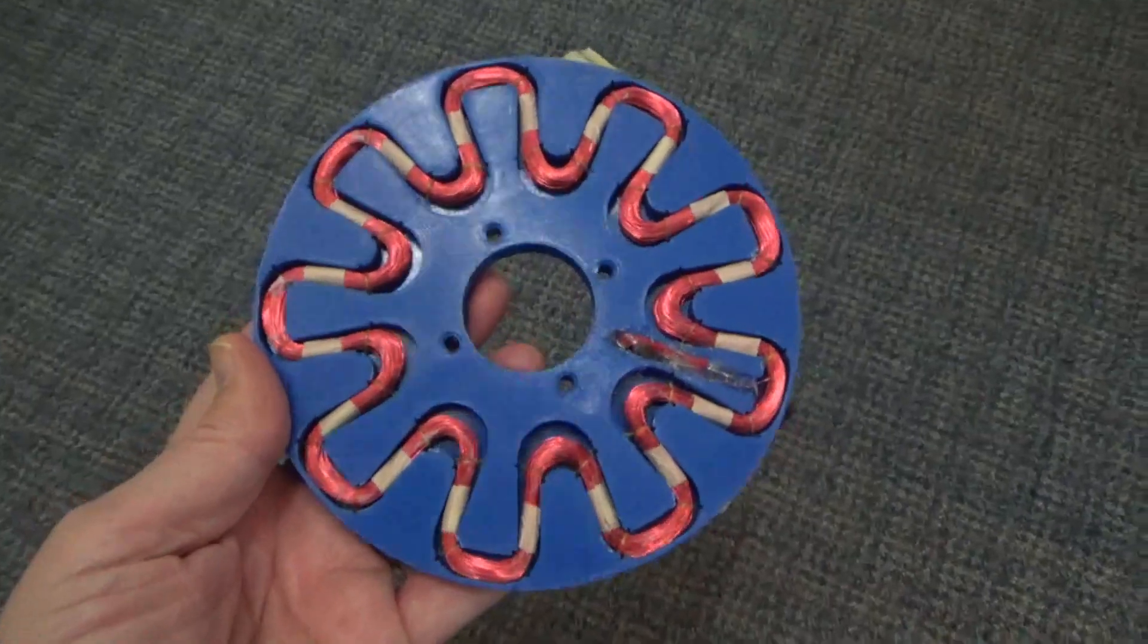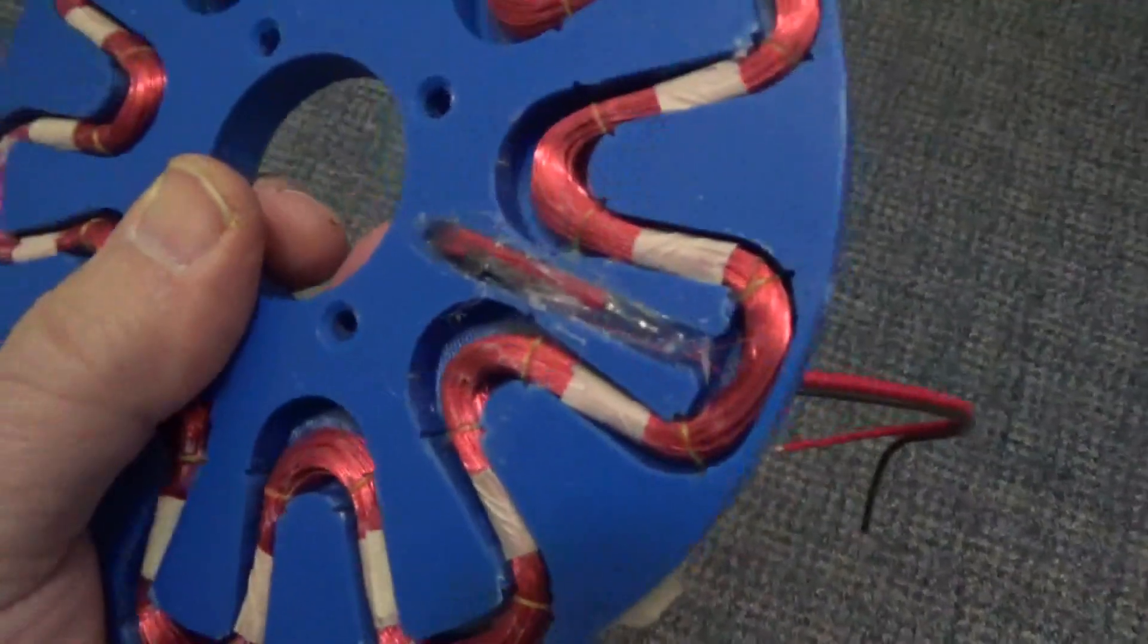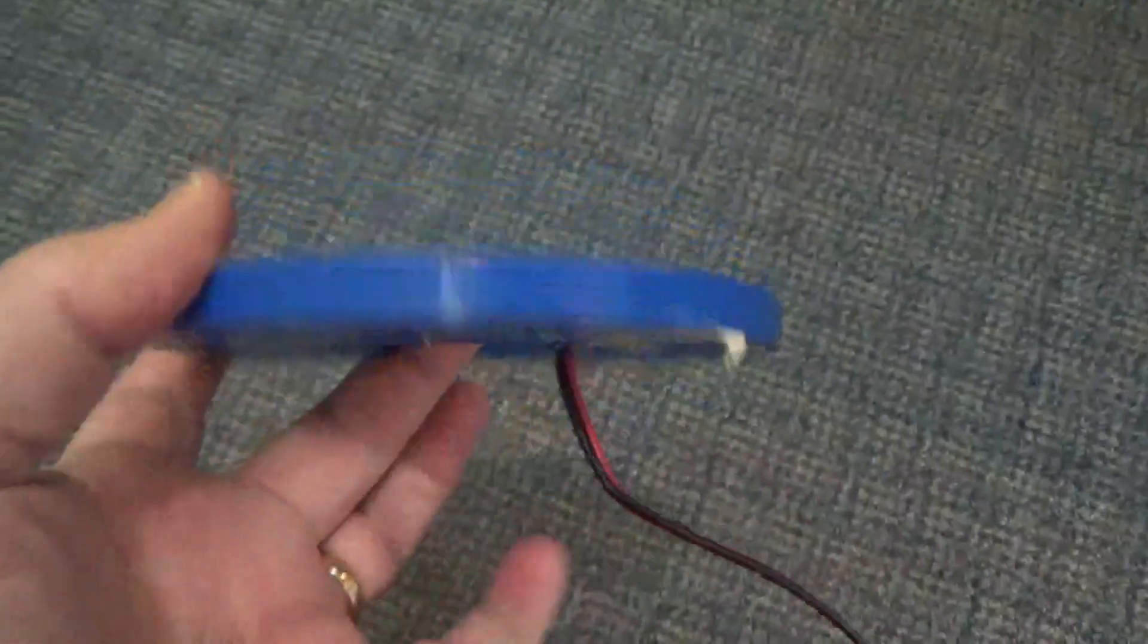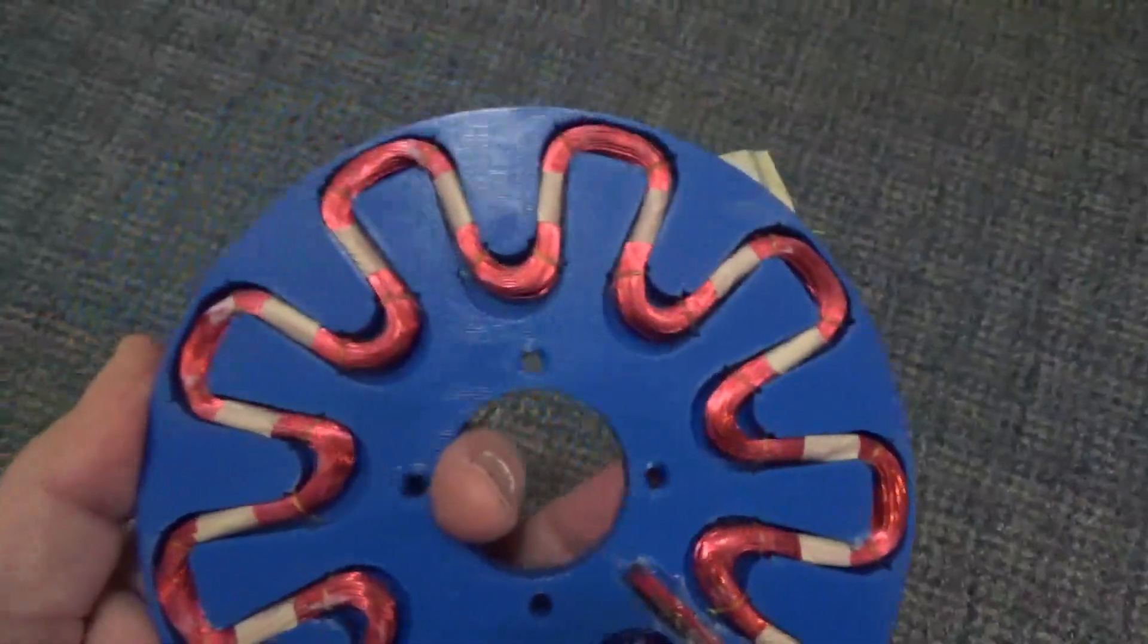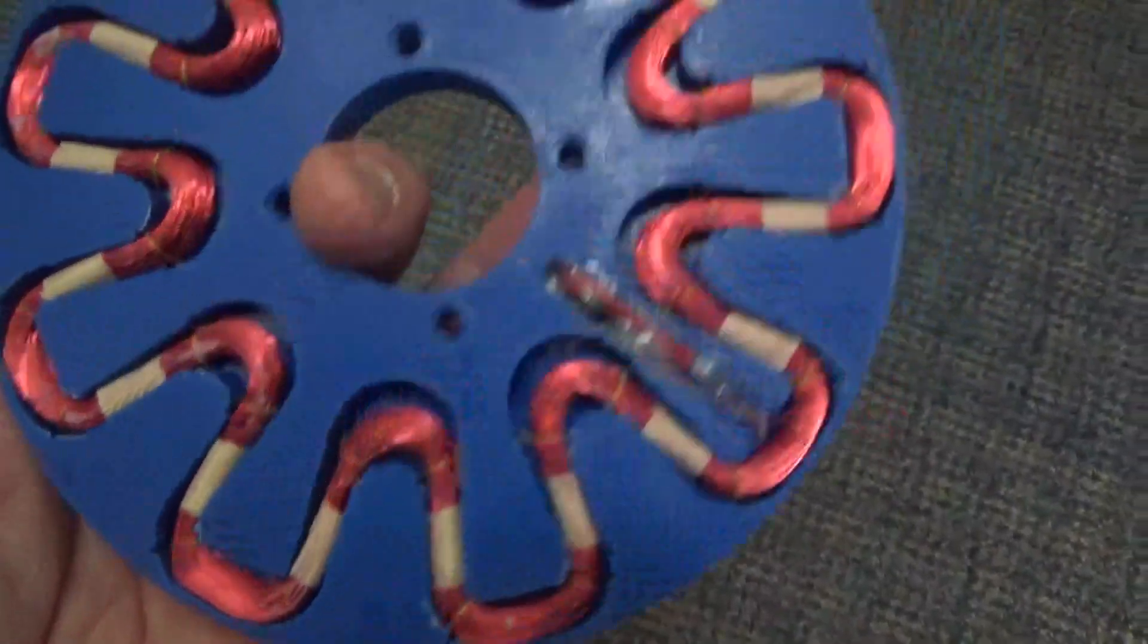Okay, here's the coil before I potted in epoxy. I did use a little bit of hot melt to hold the wire in place. But it's ready to go. Looks pretty good.